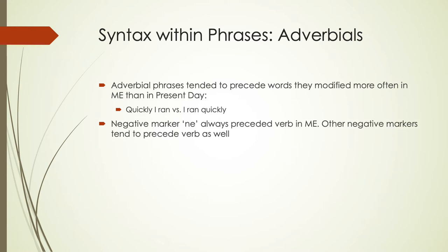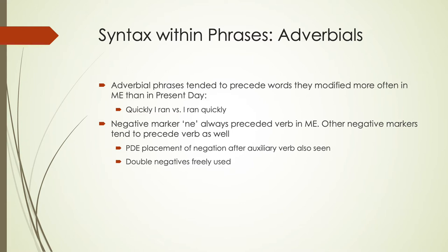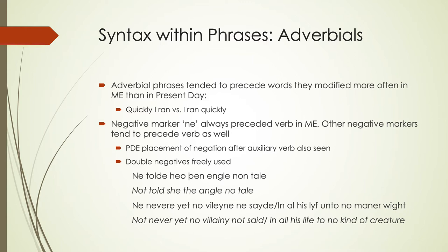The negative marker was 'nay,' and this would always precede the verb in Middle English. There were other negative markers that also tended to precede verbs. The present-day English placement of negation after an auxiliary verb is also seen, so 'have not done' would have the auxiliary, then the negative, then the verb. We see double negatives used very frequently in Middle English — something not really moved away from standardized English until later in the Early Modern period. An example would be 'Not told she the angel no tale,' with negative concord throughout.